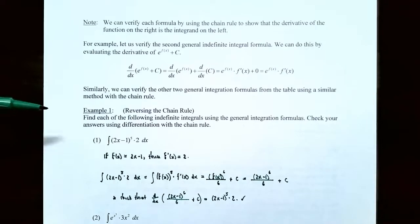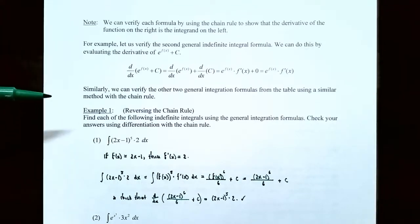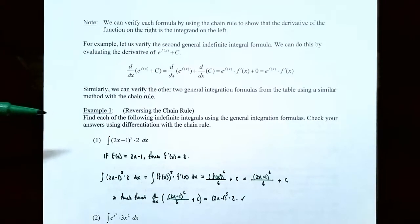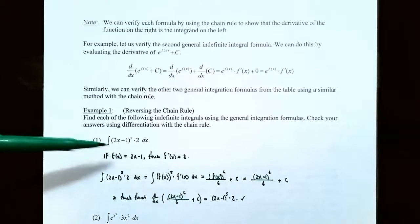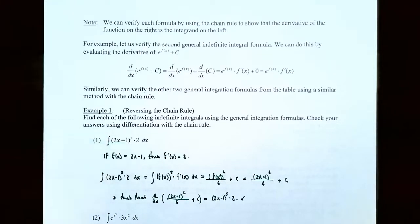Example one: reversing the chain rule. Find each of the following indefinite integrals using the general integration formulas, and check your answers using differentiation with the chain rule. Number one: the indefinite integral of the quantity 2x minus 5 to the fifth power times 2 dx.